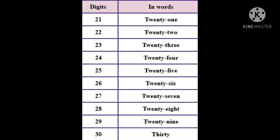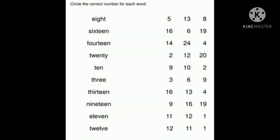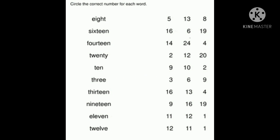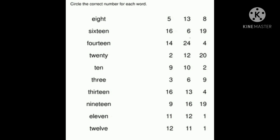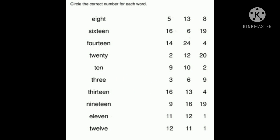So repeatedly practice these spellings. Okay? So here is your homework for today. Circle the correct number for each word. Left side words are given and right side some numbers are given. Spell out the first one — E-I-G-H-T — 8. Find out 8 from these three digits and circle it.